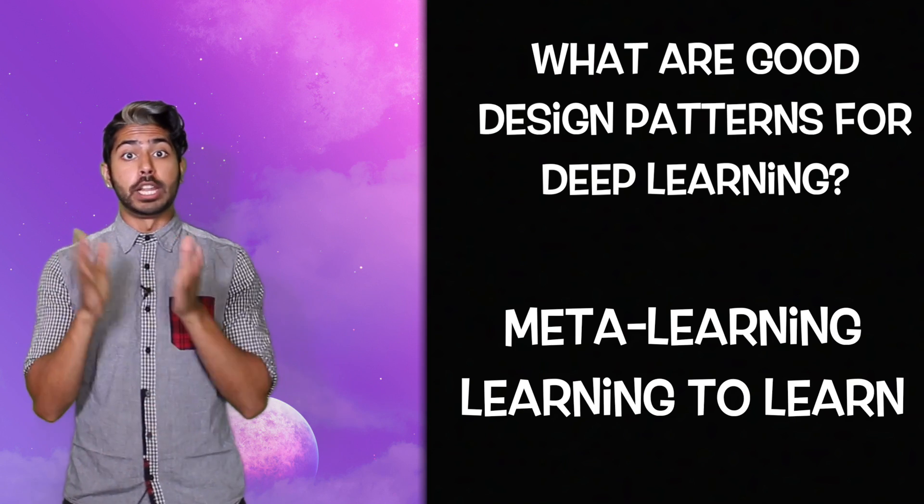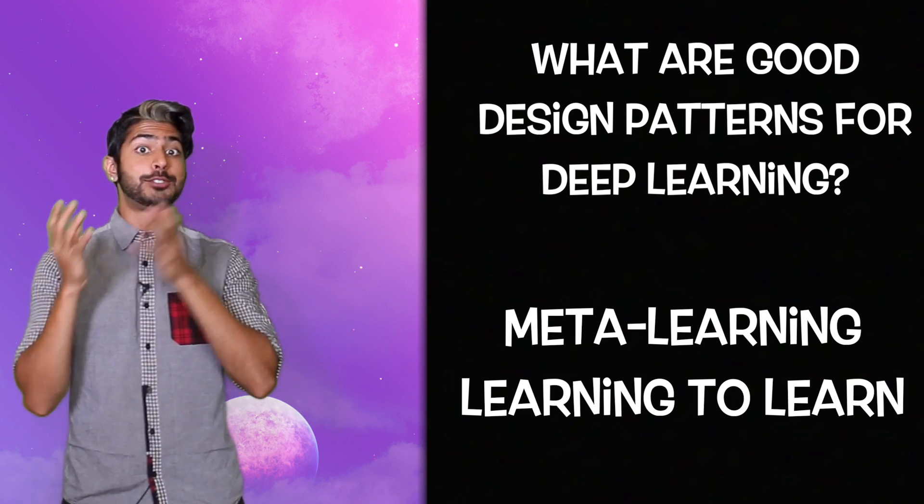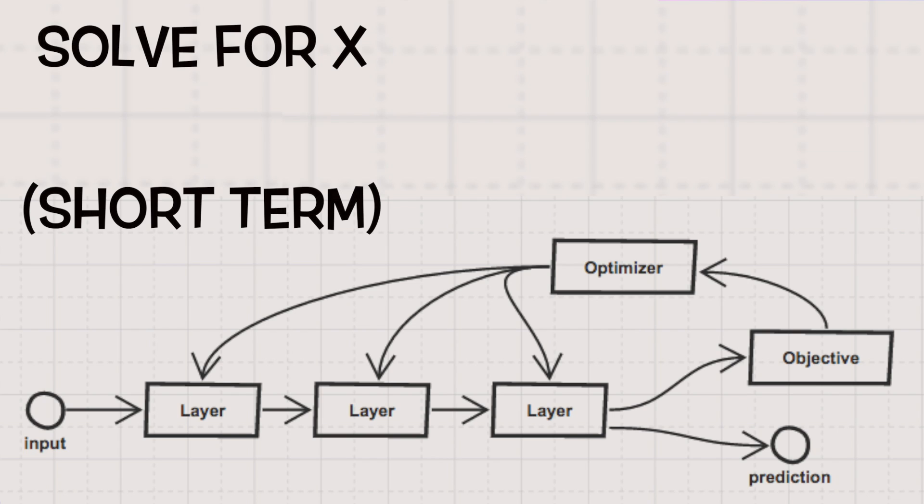So defining standard design patterns for pattern recognition networks is a field ripe for discovery. In the context of machine learning, we can call it meta-learning, or learning to learn. Can we design a system that learns how best to learn?